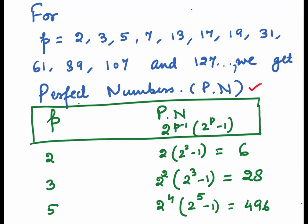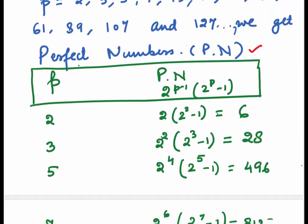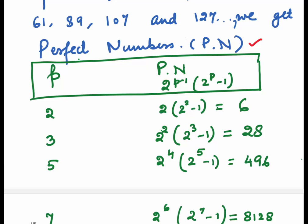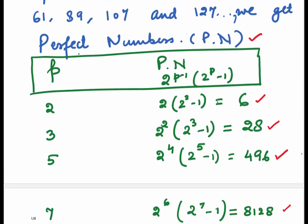Take the value p and substitute it in the formula 2^(p-1) × (2^p - 1). You will see for p = 2, we get the perfect number 6. For p = 3, we get the perfect number 28. For 5, we get 496. And for 7, we get 8128.